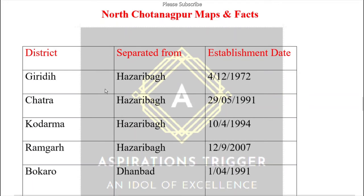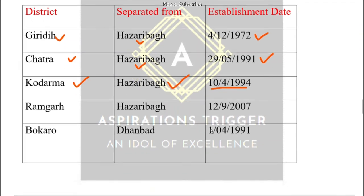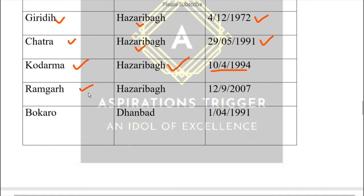Let me present this in tabular form. Giridih was separated from Hazaribagh — remember, it was in the east. First in 1972, then Chatra — going west — was separated from Hazaribagh on 29th May 1991. Then Koderma was separated from Hazaribagh on 10th April 1994. Finally, in the south, Ramgarh was separated from Hazaribagh on 12th September 2007.